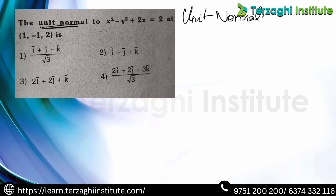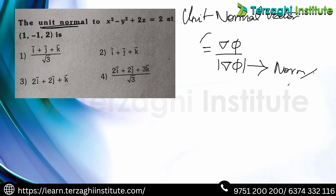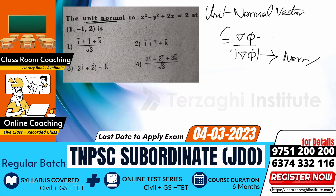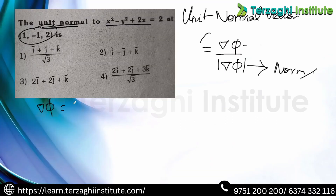We already know the concept from the matrix. Unit normal vector is similar. The formula is: unit normal n̂ = ∇φ / |∇φ|. The modulus of ∇φ gives the maximum derivative (directional derivative). This is the gradient application.